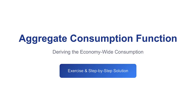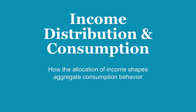The setup is pretty clear. We've got two different types of households — Type A and Type B. They have different characteristics, and there's a really important rule governing how income is split between them. Our task is to take all those pieces — the number of households, their individual spending habits, and that income distribution — and build them into one single equation for the entire economy.